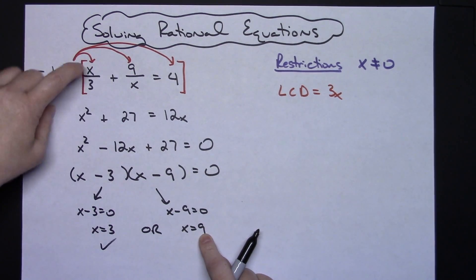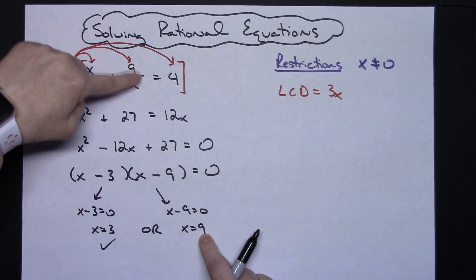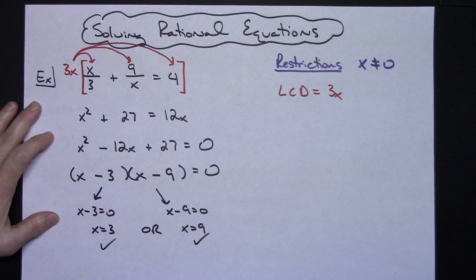If I plug nine into both of those places, nine divided by three gives me a three plus nine over nine which would be one. So three plus one is going to give me a four. So this one checks as well.